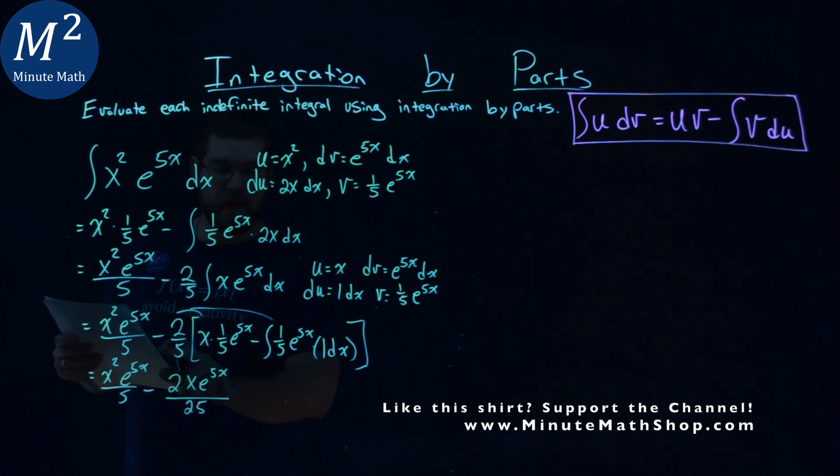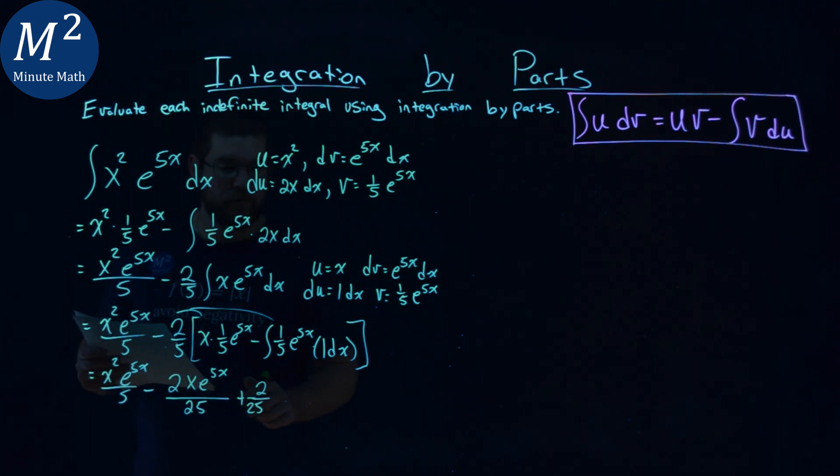Plus - now we have a negative times a negative, so we have a positive - and two-fifths times one-fifth will be that 2 over 25 again. We're going to pull out the one-fifth, so one-fifth comes outside, multiplies by the two-fifths, positive 2 over 25, times the integral of e to the 5x dx.